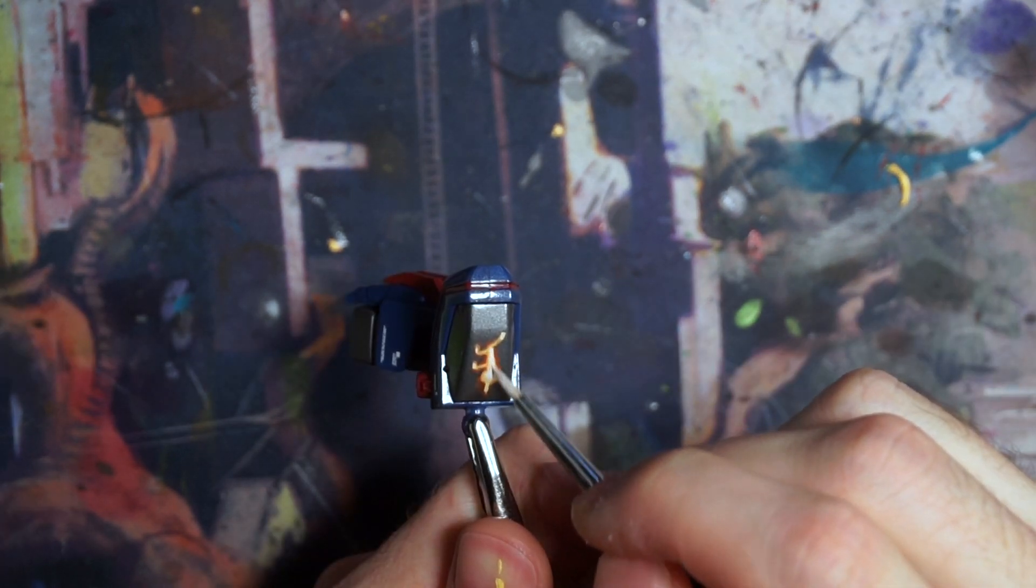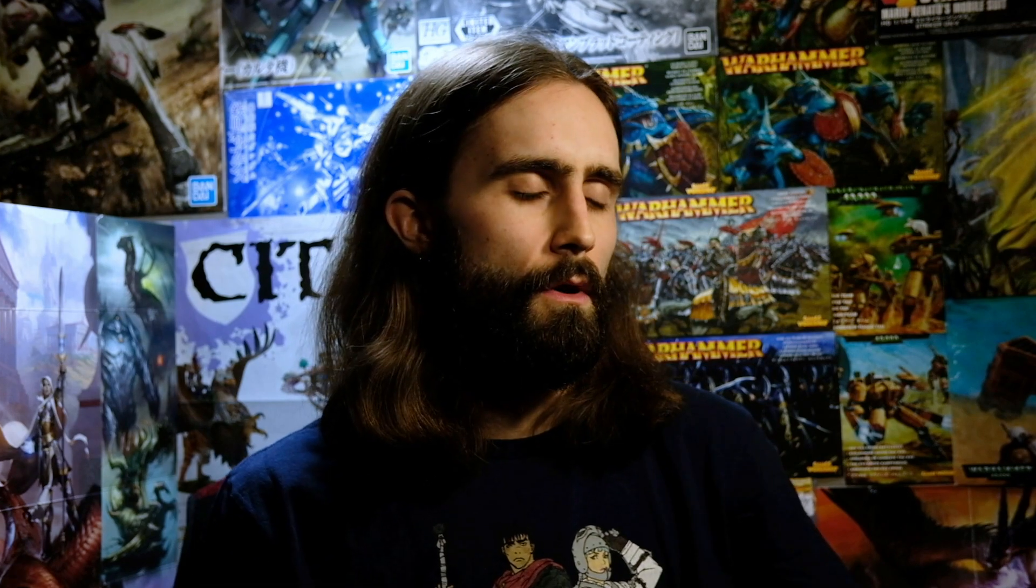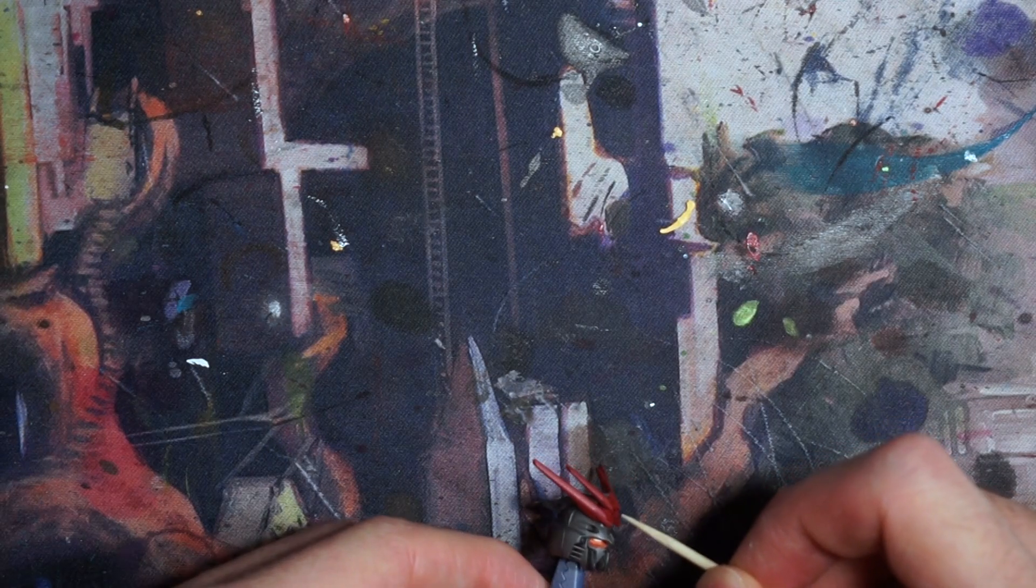By now you've probably noticed that there's a pretty obvious piece missing from the head. That's because I lost it at some point after airbrushing. That's okay, I'll just glue one of these diamonds I got from the dollar store in there, it'll be fine.